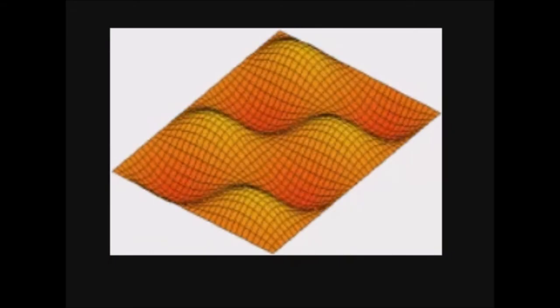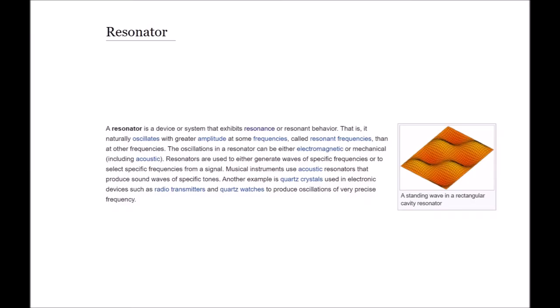The first definition that came up was resonator. A resonator is a device or system that exhibits resonance or resonant behavior. That is, it naturally oscillates with greater amplitude at some frequencies called resonant frequencies than at other frequencies. The oscillations in a resonator can be either electromagnetic or mechanical, including acoustic. Resonators are used to either generate waves of specific frequencies or to select specific frequencies from a signal. Musical instruments use acoustic resonators that produce sound waves of specific tones. Another example is quartz crystals used in electronic devices, such as radio transmitters and quartz watches, to produce oscillations of very precise frequency.